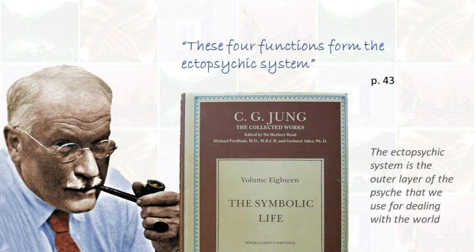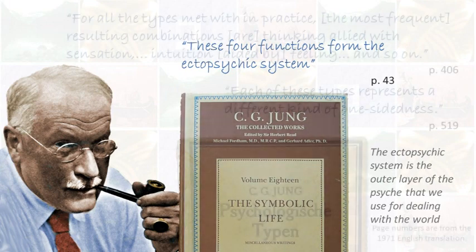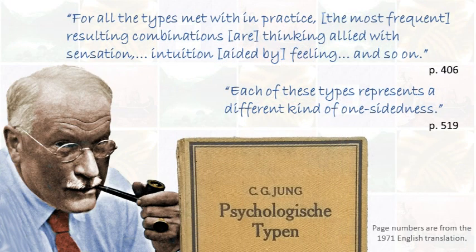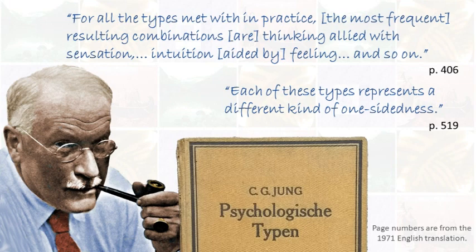Jung said typology was part of the ecto-psychic system — the outer layer of the psyche that we use for dealing with the world. So even when we use a psychological function in an introverted direction, it is still a way of adapting to the outer world. When we extrovert, we take action in the world; when we introvert, we think about the world. There are much deeper layers of the psyche that typology is not relevant to. Finally, it is sometimes thought that Jung defined eight psychological types and Isabel Briggs Myers expanded the list to 16. However, Jung defined these 16 types — on page 406 of Psychological Types he starts to list them but does not complete the list, because in his view even using two functions together we are still one-sided. We need to use all four functions together to make good judgments.